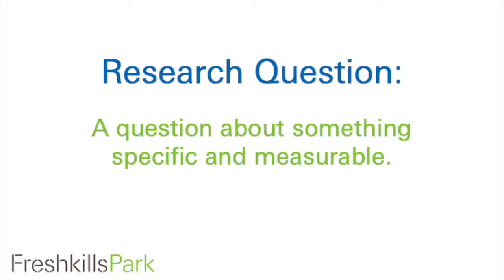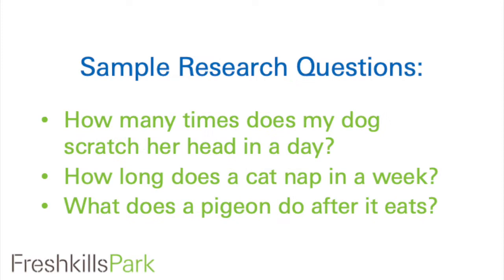Your next step is to develop a research question. What are you curious about? Think about the different animal behaviors. Remember, a good research question asks something specific and measurable. With an ethogram, you can answer questions about how many times an animal does a particular behavior, how much time is spent doing different activities, or what behaviors tend to happen before or after others.